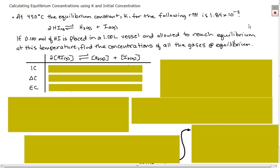So we're starting with 0.100 moles of HI placed in a 1.00 liter vessel, and it's allowed to reach equilibrium at a specific temperature. We need to find the concentrations of all the gases at equilibrium, so we're not given any equilibrium concentrations. So initially, we need to set up our ICE table, and we can see that we have it set up properly with the correct coefficients.